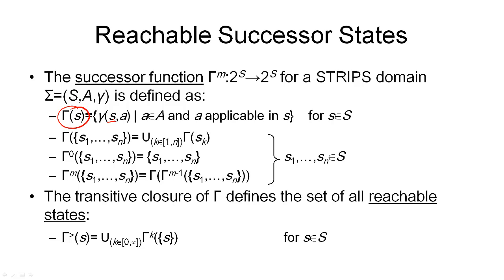If I wanted to compute this, I would have to go through all the operators and find all the ground instances of these operators that are applicable in this state. Then I could apply those actions in the state and I would get all the successor states here. This is how gamma of S is defined.